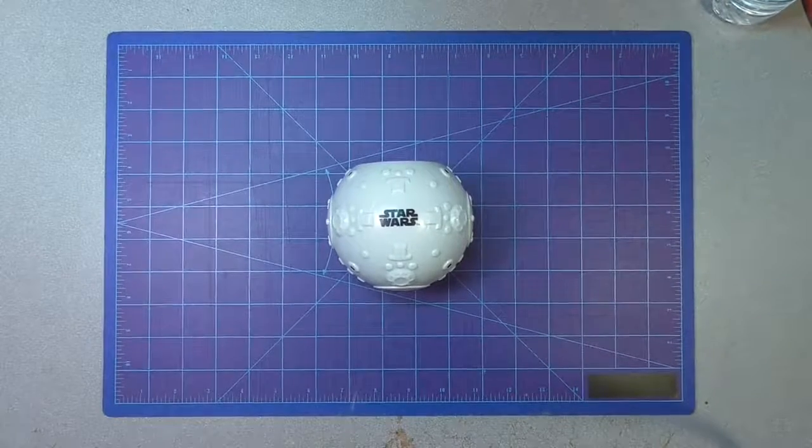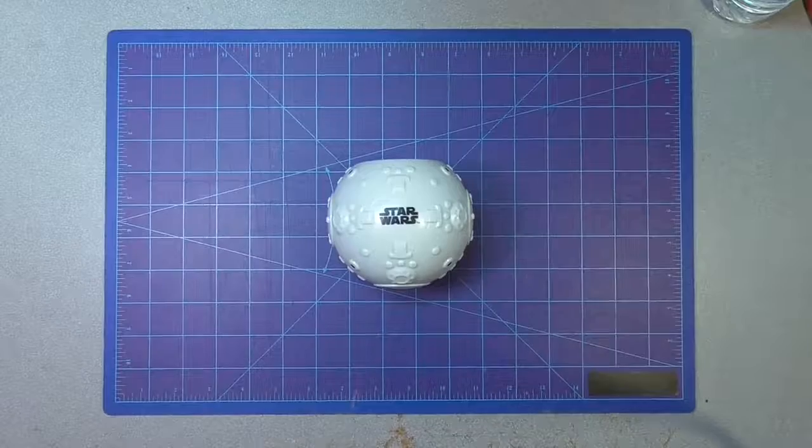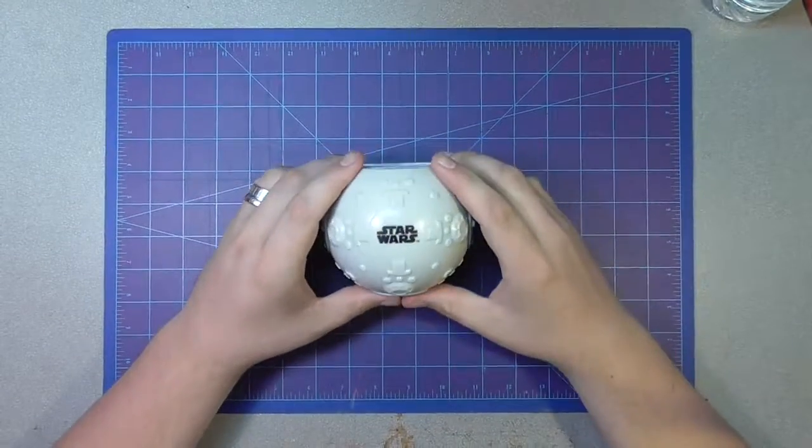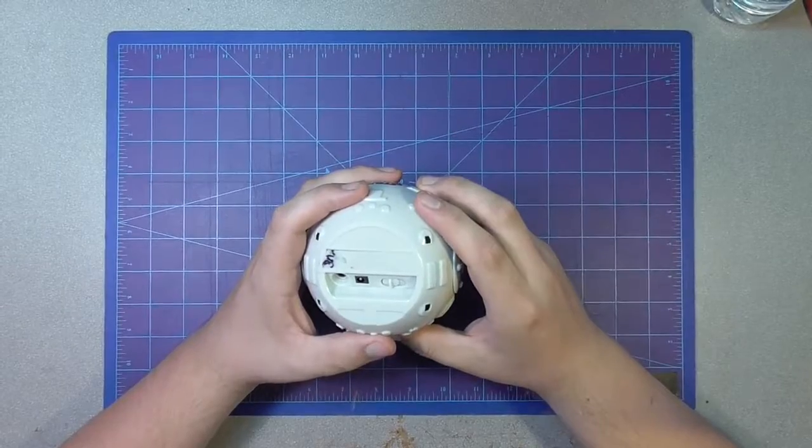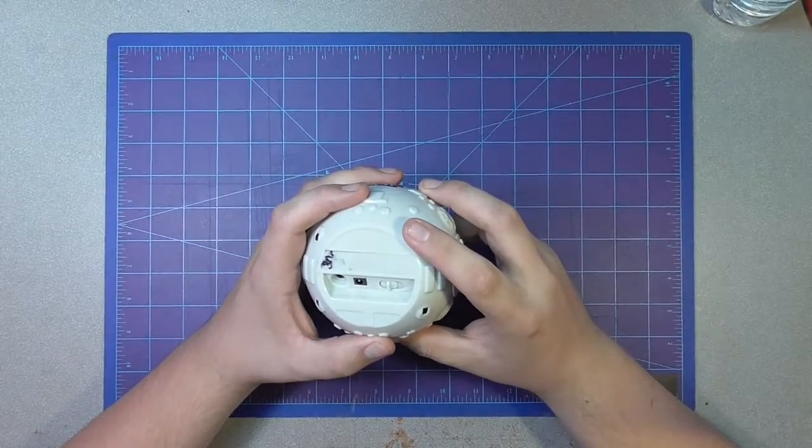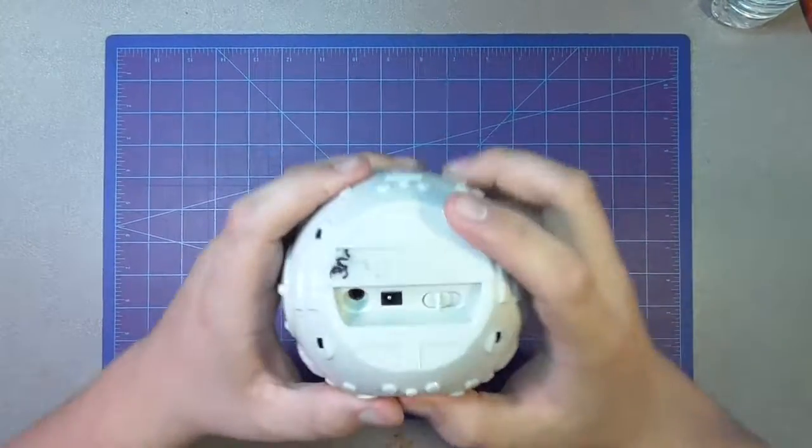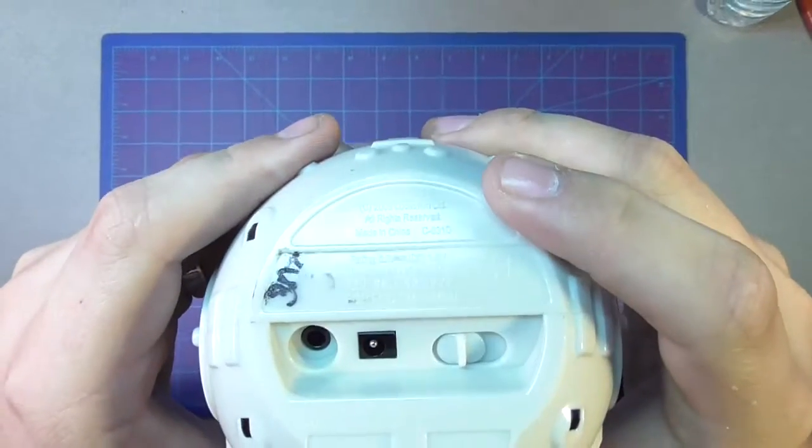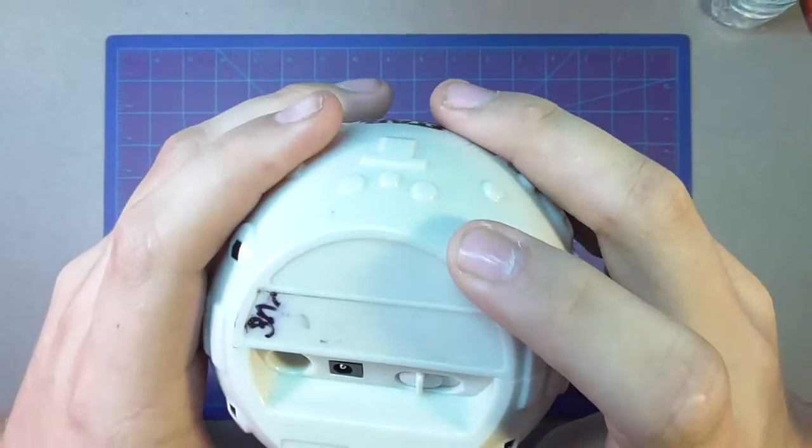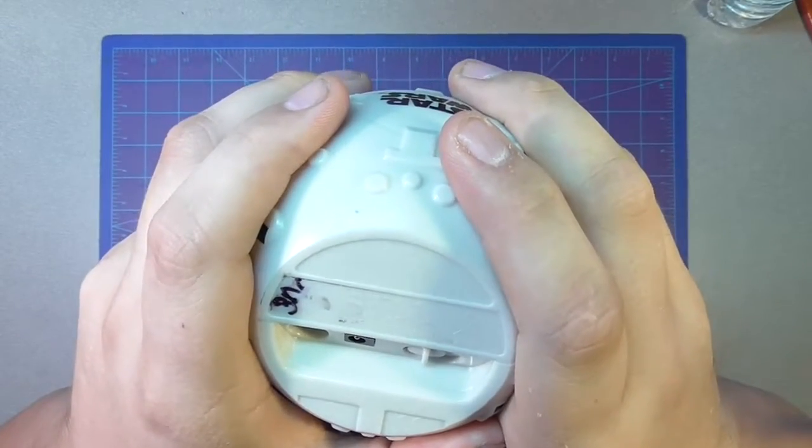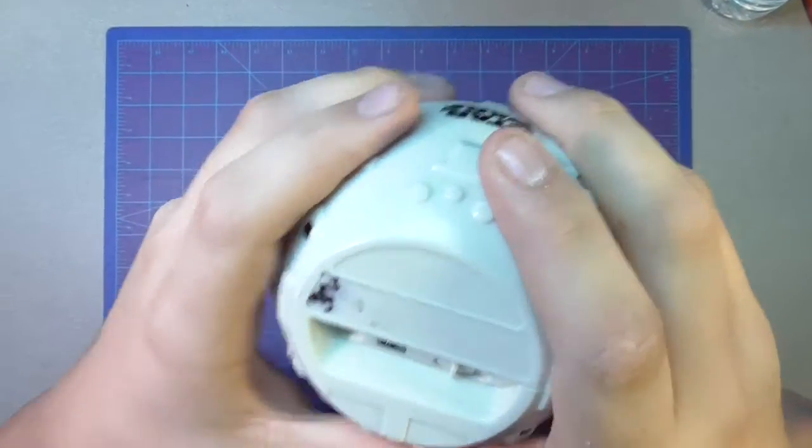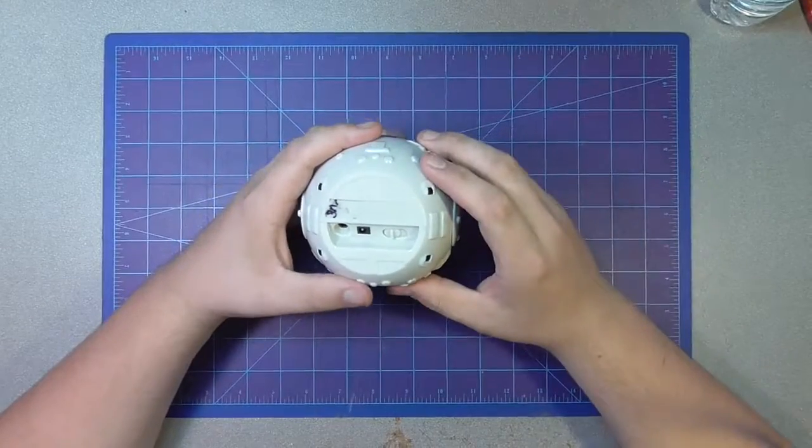So what I have here for you today is the lightsaber battle game by Hasbro. It was made in 2005 with co-partnership with Lucasfilms. It's actually very tiny. It runs off of 6 volts DC or 4 AA batteries in sequence and I'll actually show you guys that.